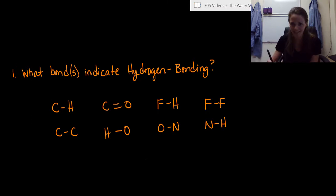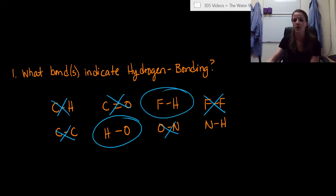Alright, did you get an answer? Hopefully you did because this is strictly memorization. There are only three types of covalent bonds that can allow for hydrogen bonding between two different molecules. It is not C-H. It is not C-O. It is not O-N. It is not F-F. So the only ones left are an O-H, an F-H, or an N-H.